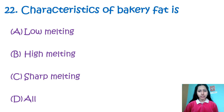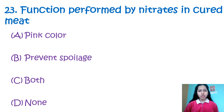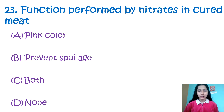Question 22: Characteristic of bakery fat is — low melting point, sharp melting point, high melting point, or all. The characteristic of bakery fat is a sharp melting point. Question 23: Functions performed by nitrates in cured meat — pink color, prevents spoilage, both, or none. During curing of meat, nitrates retain a pink color and prevent spoilage. Curing of meat by nitrates or nitrites produces a pinkish-red color by interaction with myoglobin present in the muscles. So the correct option is C, both.